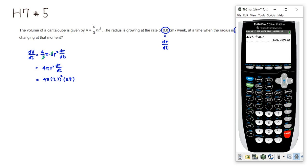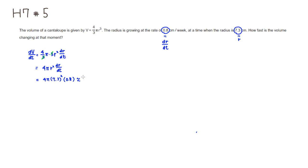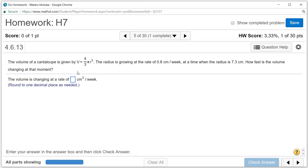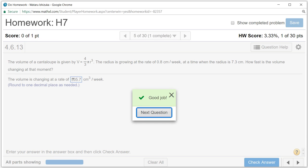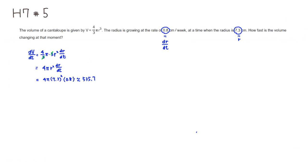So it came out to be 535.7. So 535.7 cubic centimeters per week. Let's check the answer. Got that. That's it, I hope that this was clear.